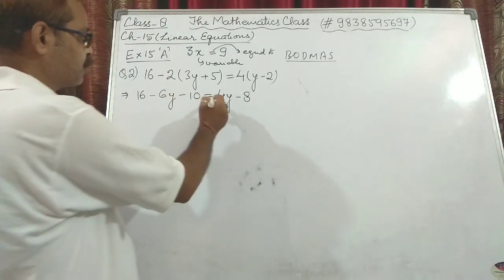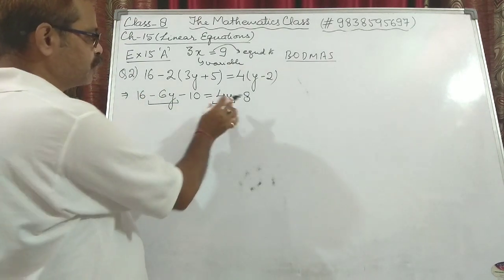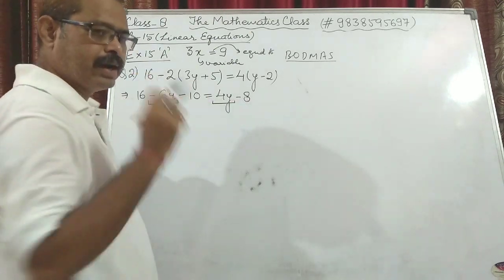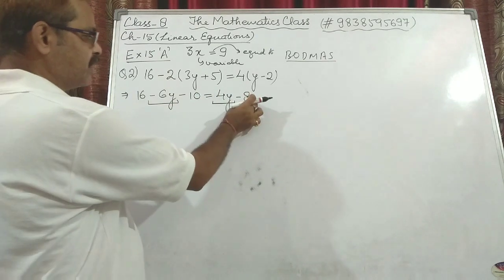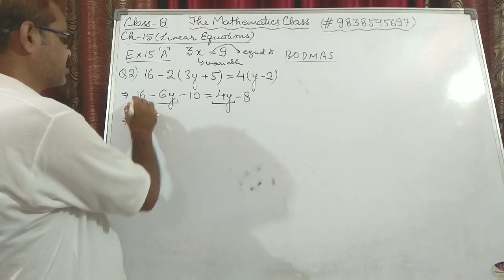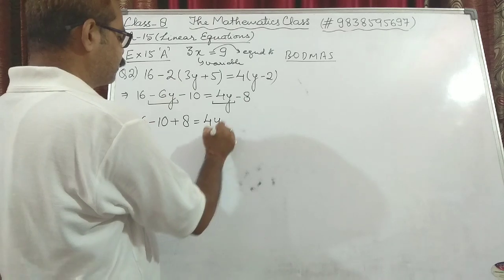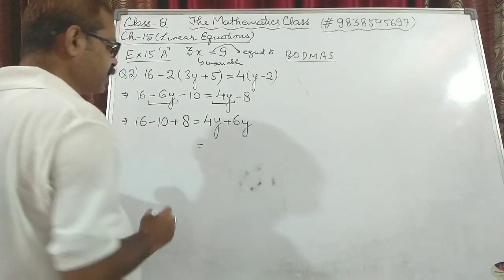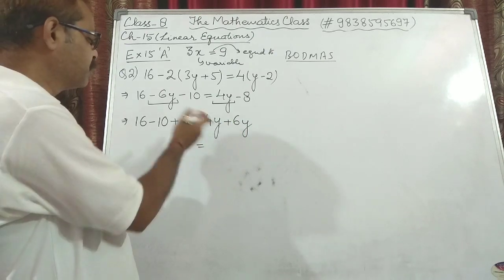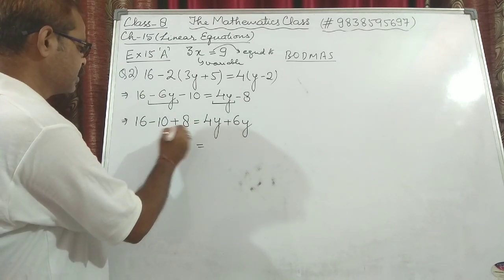Now there are two variable terms: 4y and minus 6y. Either bring 4y to this side or take minus 6y to the other side. I am taking minus 6y to the right side so it becomes positive, and minus 8 comes to the left side and becomes plus 8. So: 16 minus 10 plus 8 = 4y + 6y. All variable terms are on one side and all numeral terms on the other. 16 − 10 = 6, plus 8 = 14.